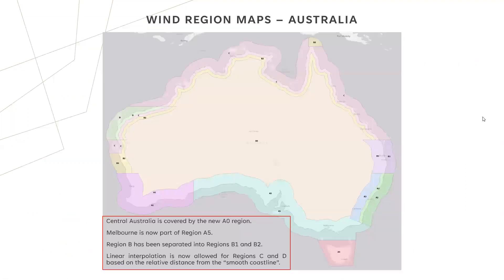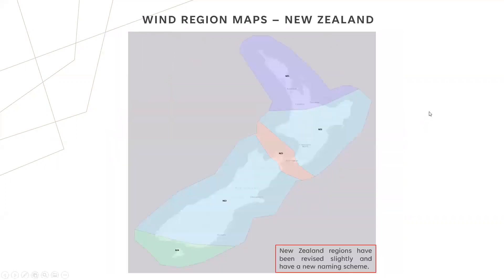We're going to get right into it and go through these fairly quickly. This is probably less relevant for New Zealand engineers, but the wind region maps for Australia and New Zealand have been updated. The wind region maps for New Zealand are only fairly slightly revised, mostly around the North Island at the top. And they've got a new naming scheme, as you may be aware.